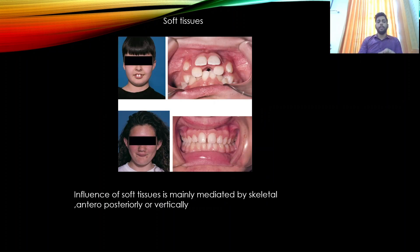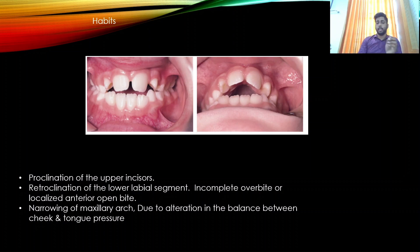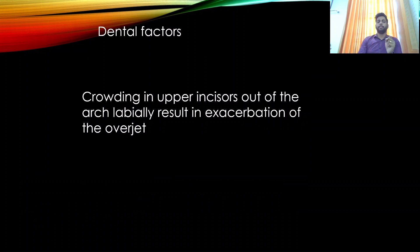The influence of soft tissue is mainly mediated skeletally in the anteroposterior or vertical dimension. Habit-related factors include proclination of upper incisors, retroclination of the lower labial segment, incomplete overbite or localized anterior open bite, and narrowing of the maxillary arch. The dental factor results in crowding of the upper incisors labially out of the arch, leading to exacerbation of overjet.